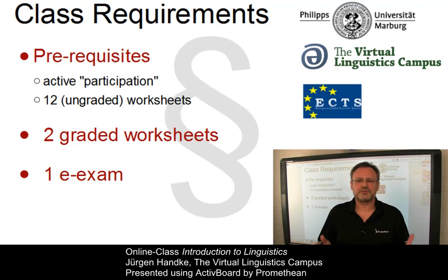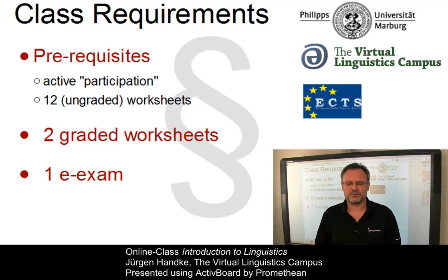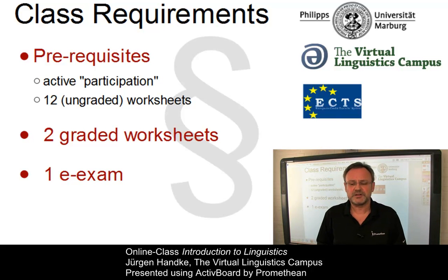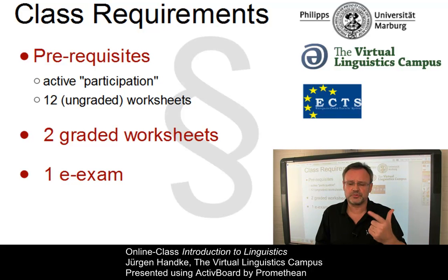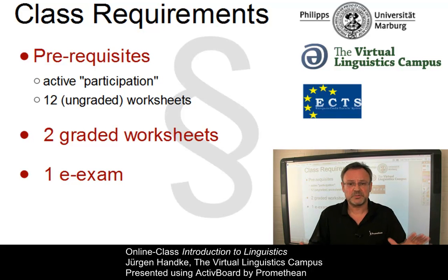Finally, you want to know what you have to do in order to get the class credits. This class involves four credits, where one credit is the equivalent of about 30 hours of workload. A central prerequisite is that you actively participate. In an online class, this means go online, study the content and the videos, and do the 12 ungraded worksheets as well as the practicals. Your final grade will be calculated on the basis of two graded worksheets that make up 40% of the final grade, and one e-exam that makes up 60% of the final grade. How the e-exams work will be explained when required.